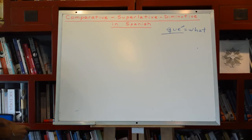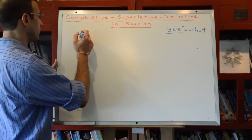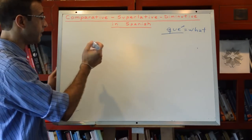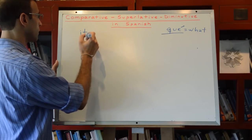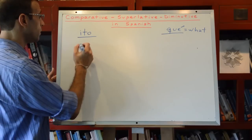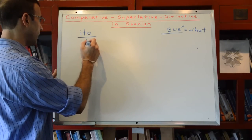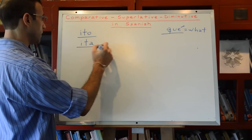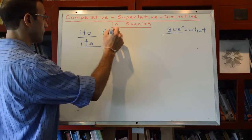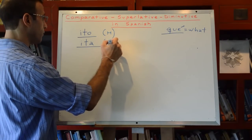In Spanish, the rule for the diminutive works for all the nouns. So, the diminutives in Spanish, it's adding this suffix. Ito, if it is masculine, or Ita, if it is feminine. For masculine and for feminine.